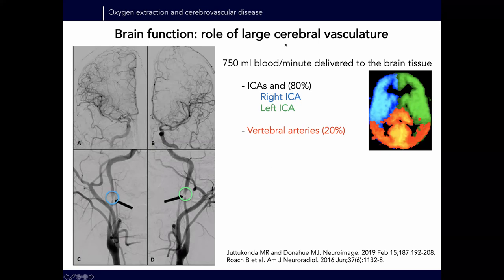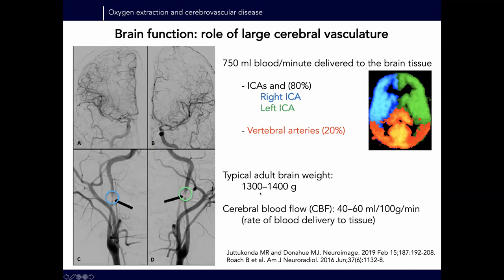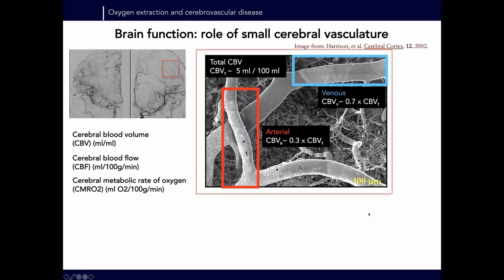Blood delivery to the brain is affected in cerebrovascular disease. Most blood comes from the right and left internal carotid arteries, which perfuse the anterior circulation, with a minority from the vertebral-basilar system perfusing the posterior brain. A typical adult brain weighs 1,300–1,400 grams, with cerebral blood flow generally around 40–60 mL per 100 grams per minute. Below that range you get into ischemia; above it, hyperemia.